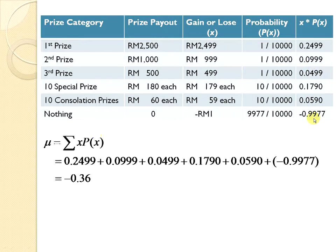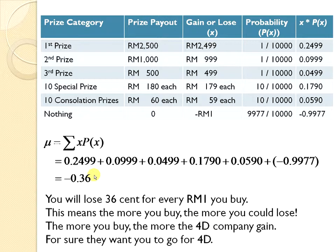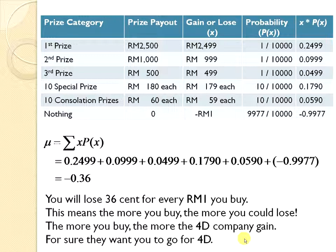We get all these values, and using the formula for mean — the summation of x·P(x) — we add up all the numbers and get negative 0.36. What does this mean? This means you will lose 36 cents for every RM1 that you buy. The more you buy, the more you could lose, and the more the 4D company gains. So if you have a habit of buying 4D, please stop it today.